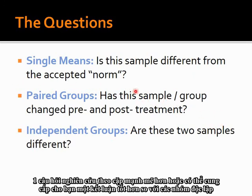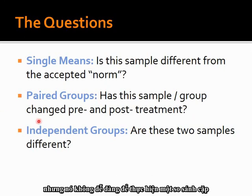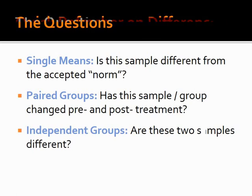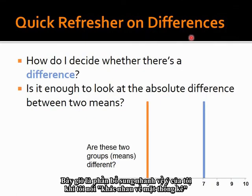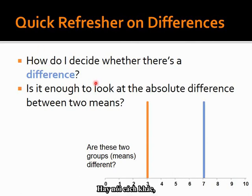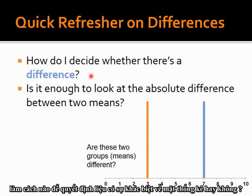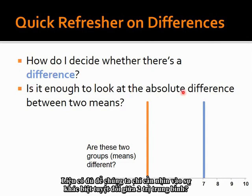A paired research question is stronger and able to give you a better conclusion than independent groups, but it's not so easy to carry out a paired comparison. Now, a quick reflection on what we mean by statistical difference — how do I decide whether there is a statistical difference? Is it enough to just look at the absolute difference between two means?